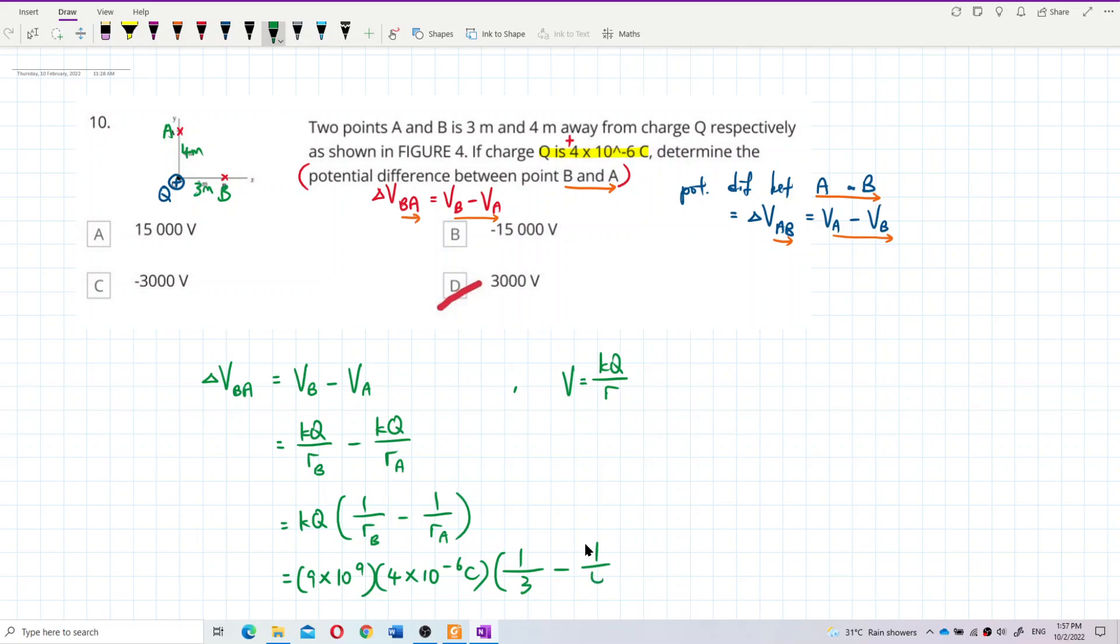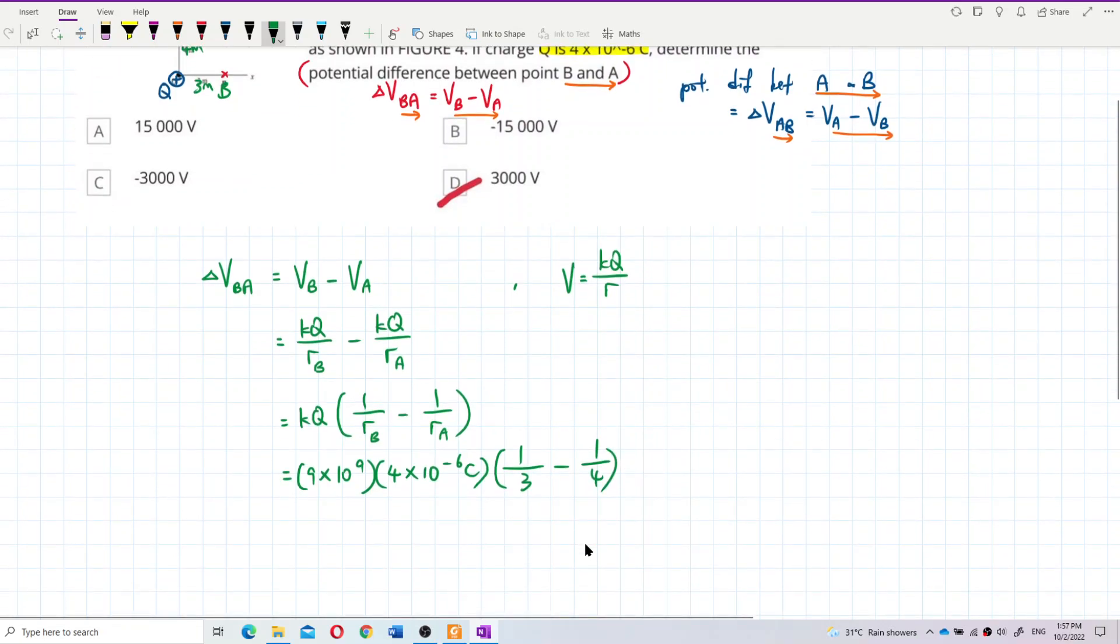Let's calculate. 1 over 3 minus 1 over 4, then multiply 4×10^-6, then multiply 9×10^9. So the answer is 3000 volts.